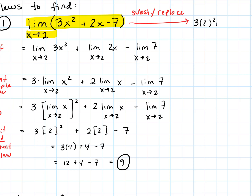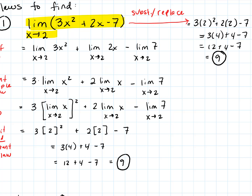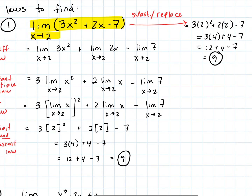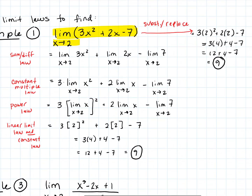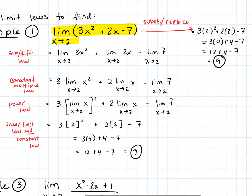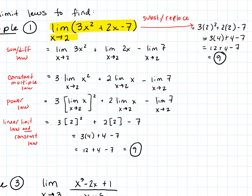3 times 2 squared plus 2 times 2 minus 7 — check out what happens. This is just 3 times 4 plus 4 minus 7. We've got 12 plus 4 minus 7, and of course that gives us the same value as we got calculating the limit and showing all of the steps, which I did in fast forward for you, so you could just watch that happening quickly.